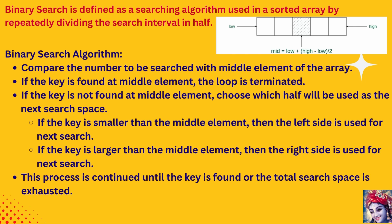If it is greater than the middle index, then we can eliminate the first half of the array as the element will be present only in the second half. In case the given number is less than the array middle index, that means the key value is present only in the first half of the array, and the second half can be eliminated. The half of the array in which the element is not present is eliminated, and the search continues on the remaining half until the search value is found.